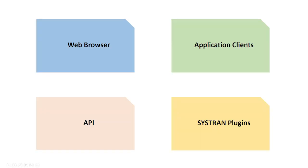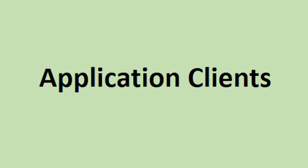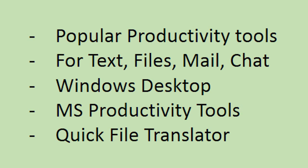The second category is a collection of tools that you can optionally install on your Windows desktop or laptop. These are called application clients, consisting of user tools for day-to-day translation activities, such as toolbars for MS Office or emails in MS Outlook, a translation plugin for multilingual chat in Skype for Business, a quick file translation tool, an interactive translator with Dictionary Lookup, and keyboard shortcuts to translate just about anything you can select or highlight, no matter which application you are using.